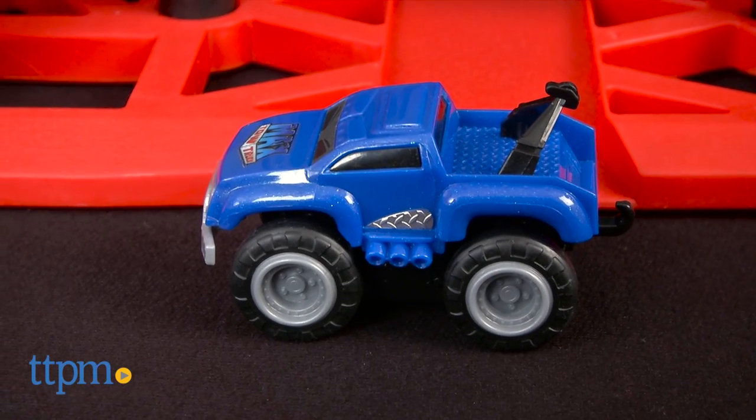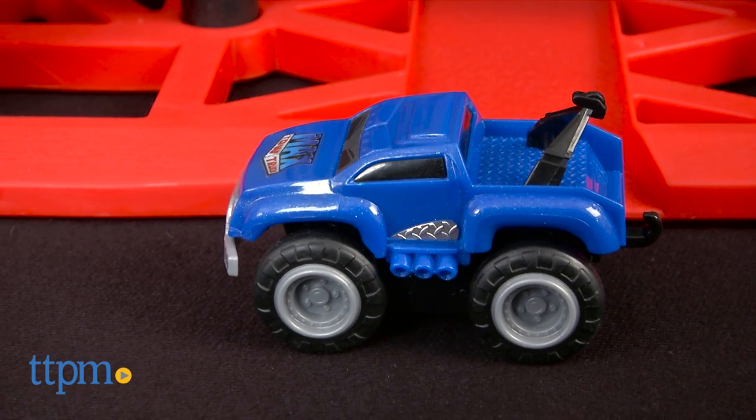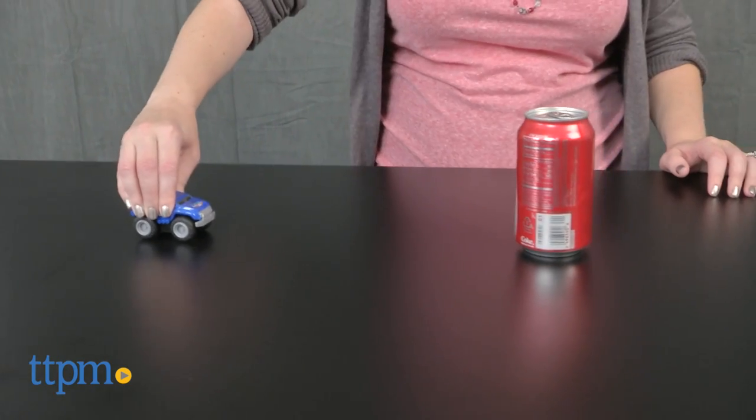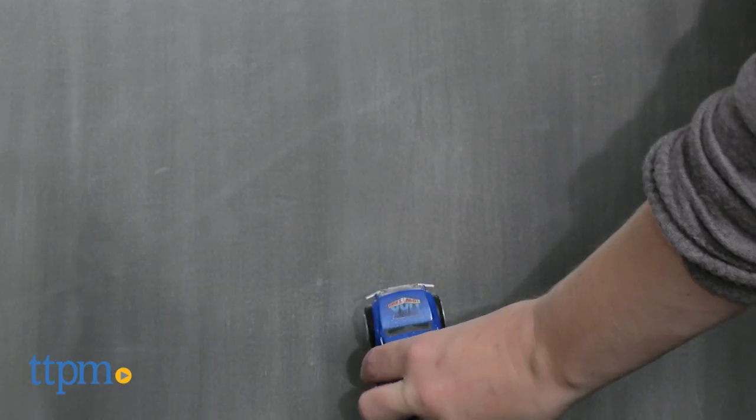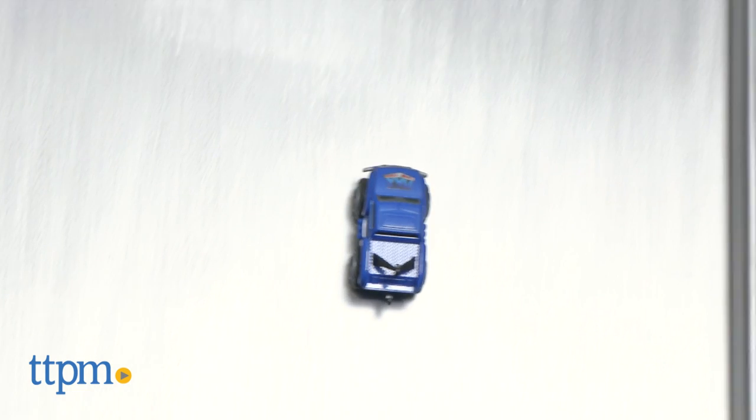The set includes one Max Mini Hauler that is about one and a half inches tall and three inches wide, can push or pull up to 25 times its own weight, and can climb steel surfaces thanks to built-in magnets on the bottom. Just rev it up and let it go.